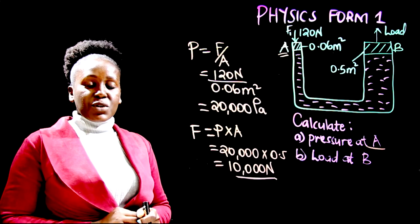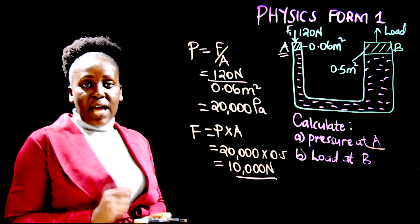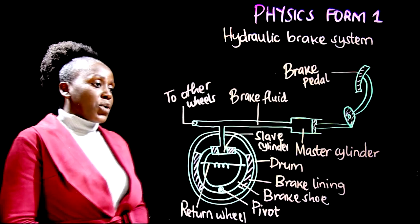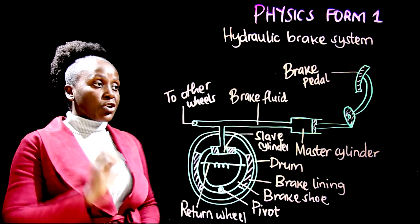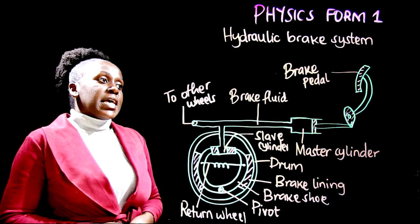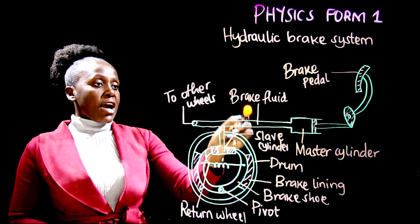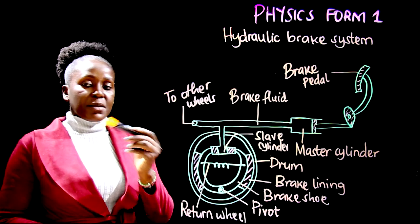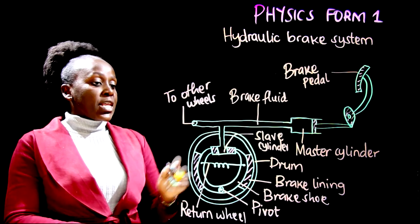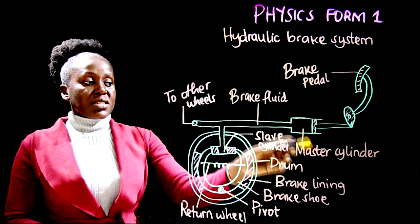Now we are going to discuss how the hydraulic brake system works — what happens from the moment you step on the brake pedal to the moment the car stops. As you can see, we have the brake pedal, the master cylinder, inside we have the brake fluid, and this is the path to all the other wheels. Most cars have four wheels. The brake line goes into a slave cylinder — the master cylinder is bigger and the slave cylinder is smaller.